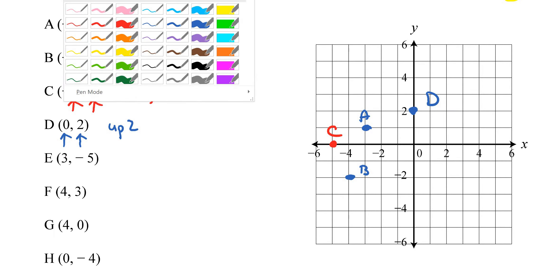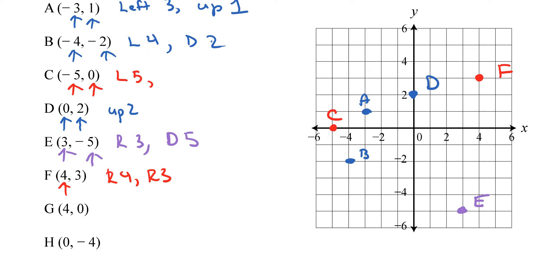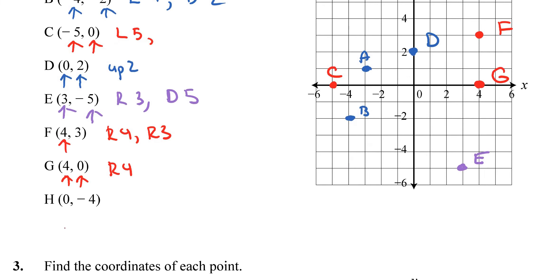For point E, go right 3 and down 5, so somewhere around here — that's point E. For point F, go right 4 and up 3, somewhere about here. For point G, 4 comma 0 means go right 4 — that's point G. For point H, 0 comma negative 4 means go down 4 units — that's point H.